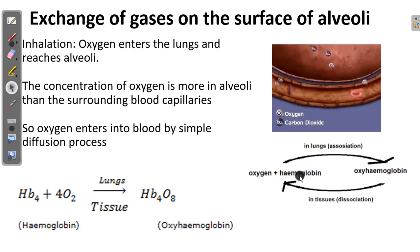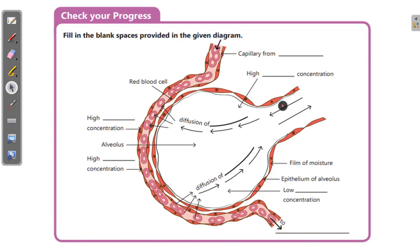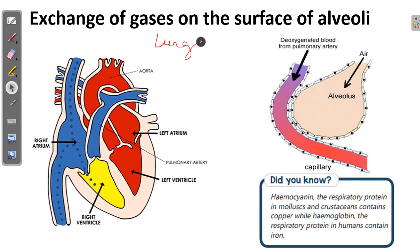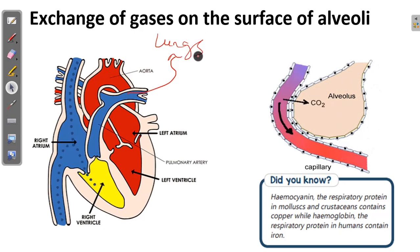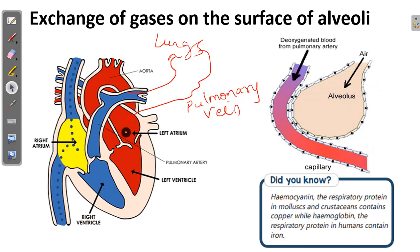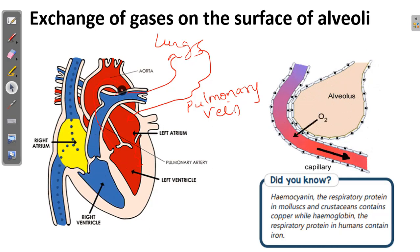Oxygen combines with hemoglobin to form oxyhemoglobin, and will then enter your blood vessels. From the blood vessels it enters the heart, and from the heart it goes to all parts of your body. The pulmonary artery carries deoxygenated blood to your lungs, the exchange takes place in the alveoli, and then the oxygenated blood is carried by the pulmonary vein to the left atrium, into the left ventricle, and from the left ventricle through the aorta to all parts of your body.